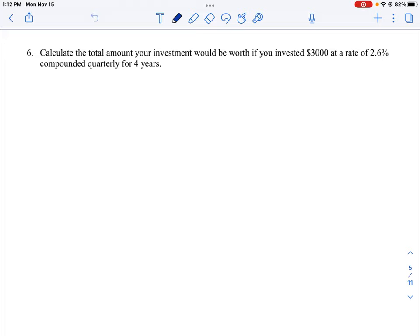Let's look at question number six, where we have to calculate the total amount your investment would be worth if you invested $3,000 at 2.6% compounded quarterly for four years.